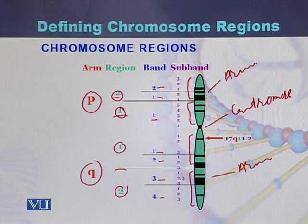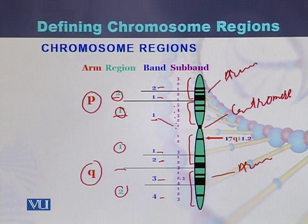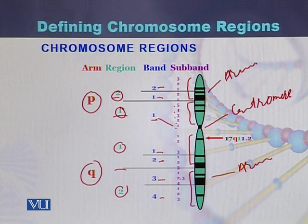Within the bands there are sub-bands. For example, within band one we can see sub-bands one, two, three, four, and five. So sub-bands are present within bands, and bands are present within regions. Regions are the larger fragments visible with a microscope during karyotyping.